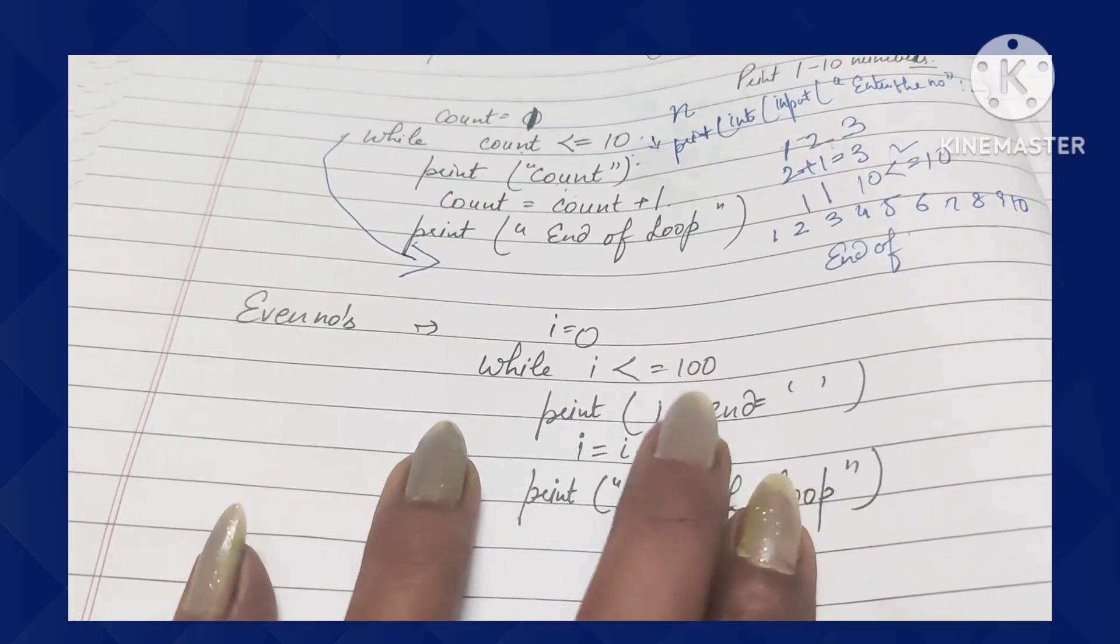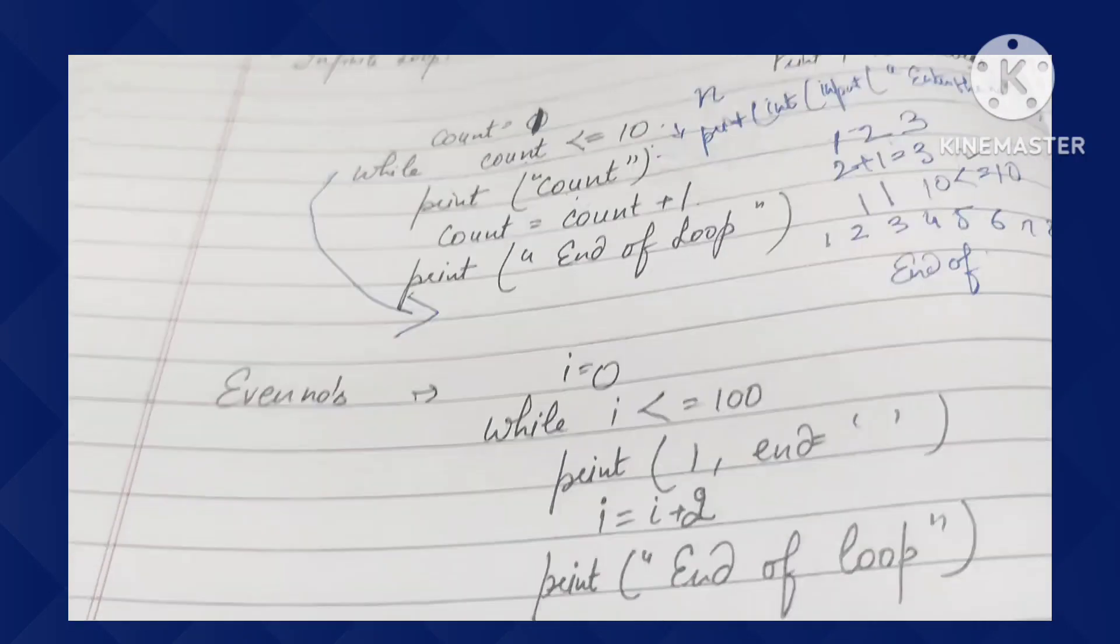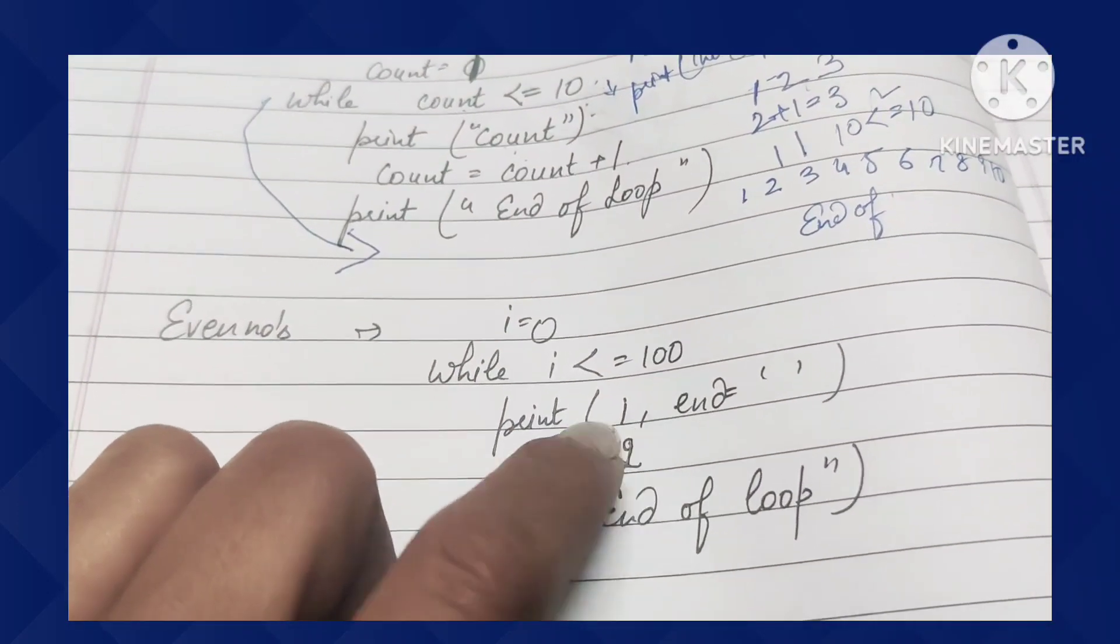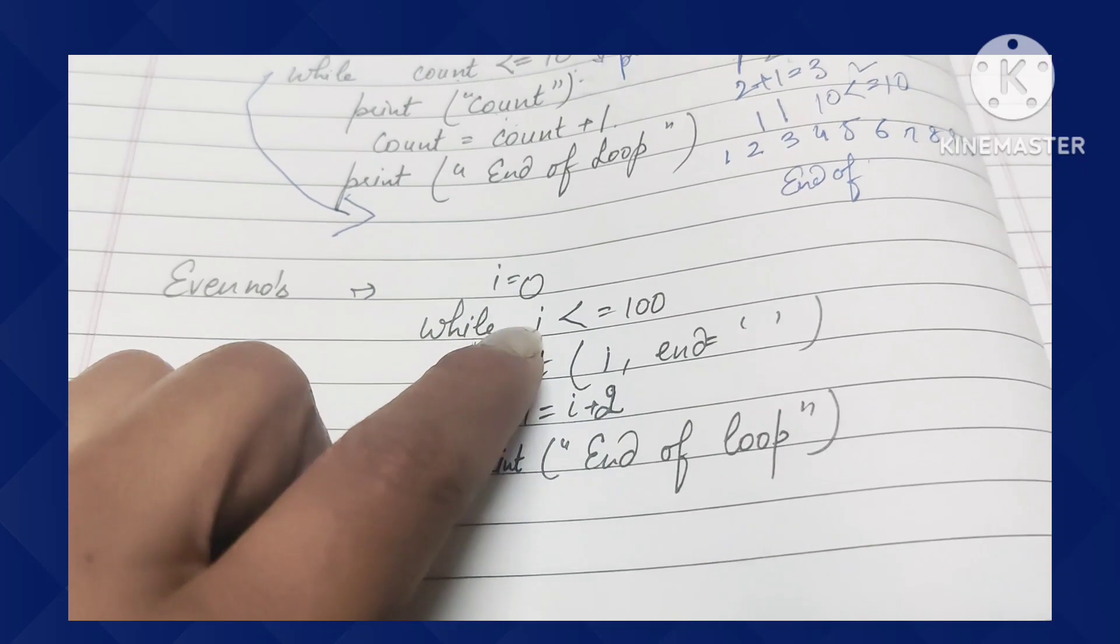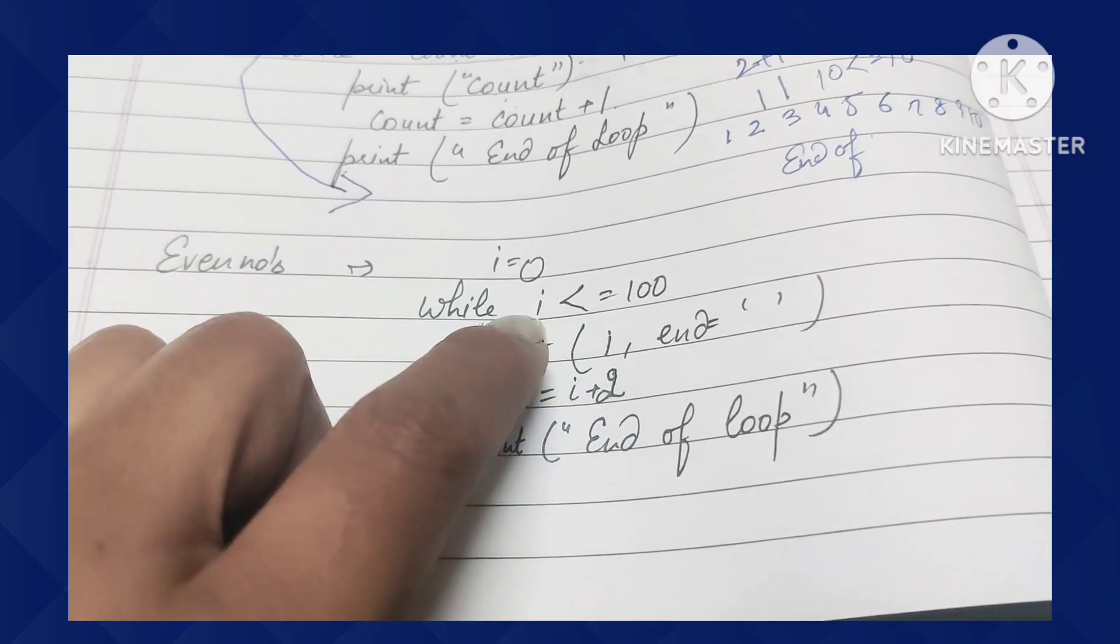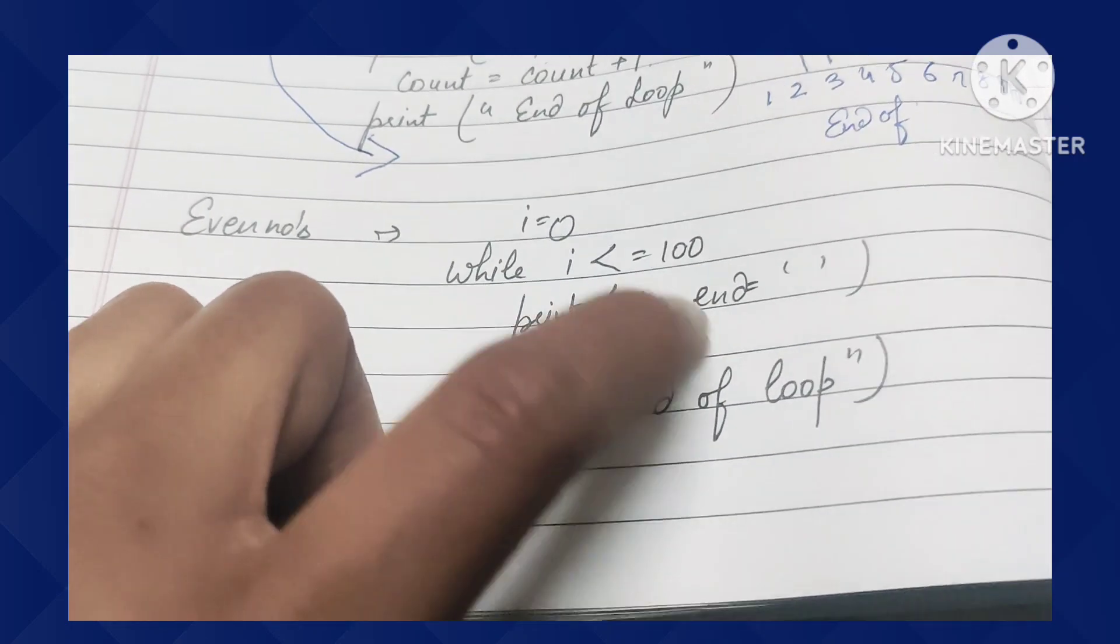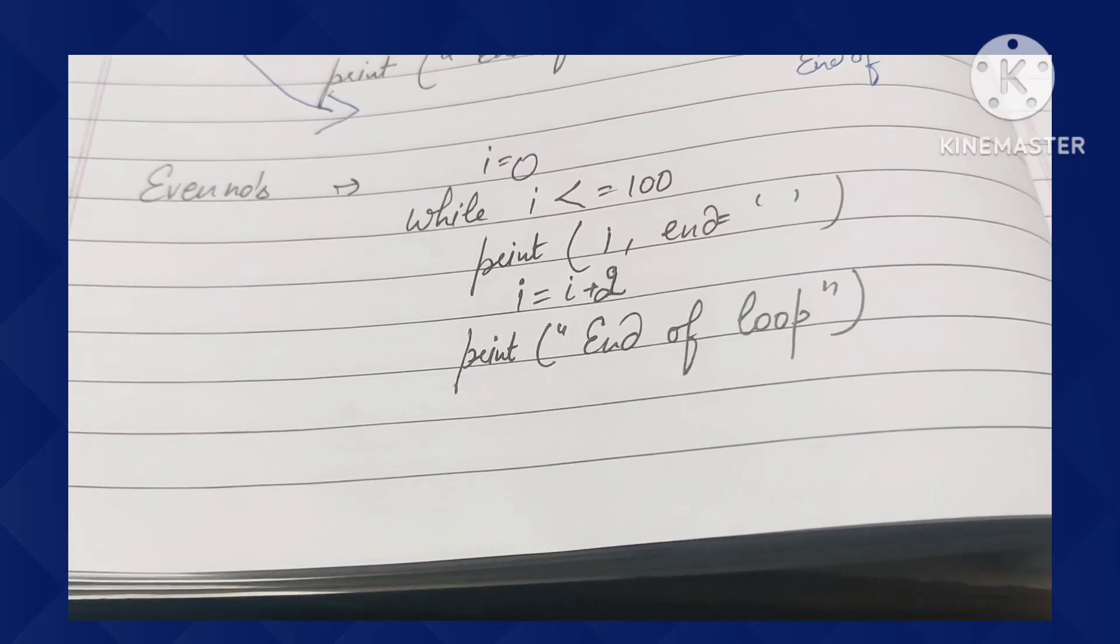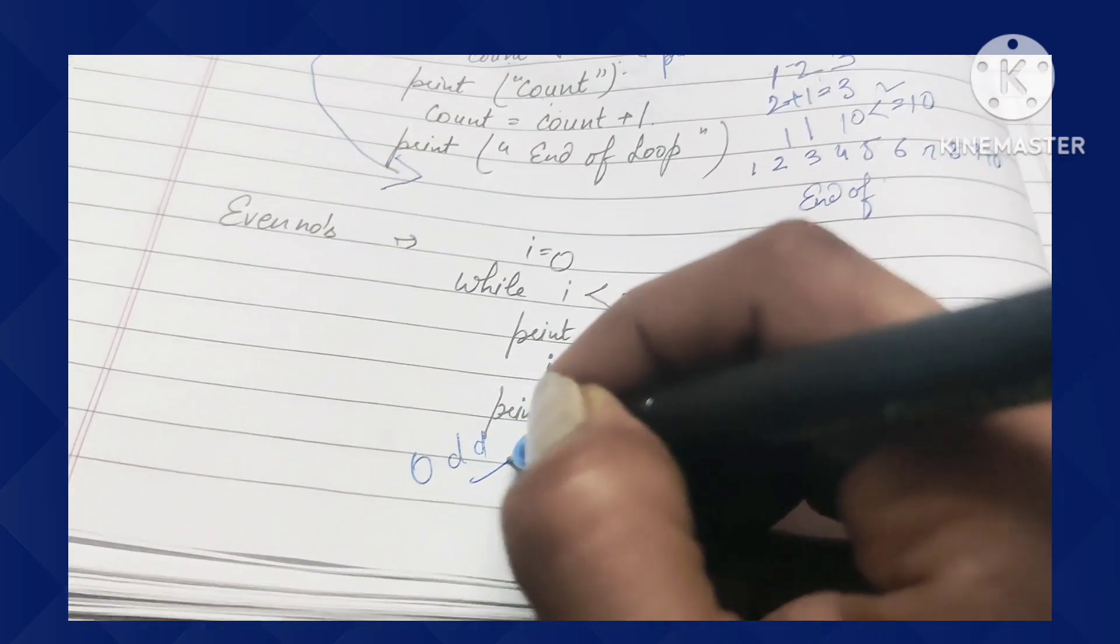Starting from zero, zero plus 2 equals 2. Two less than equals to 100, then 2 plus 2 equals 4, four less than equals to 100, then 4 plus 2 equals 6 - automatically all even numbers up to 100 will be printed with this short code. You'll also get the 'end of loop' message. This was the work of our while loop. Similarly, you can try the odd numbers program yourself in the shell and you'll get the result.